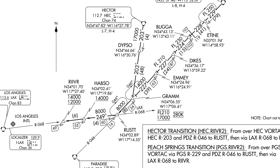The final type of altitude you'll see is an altitude with a line above it. This indicates that that is the maximum altitude that you can fly during that segment of the approach procedure. Maximum altitudes are in place to protect you from possibly climbing into traffic that may be crossing above you.